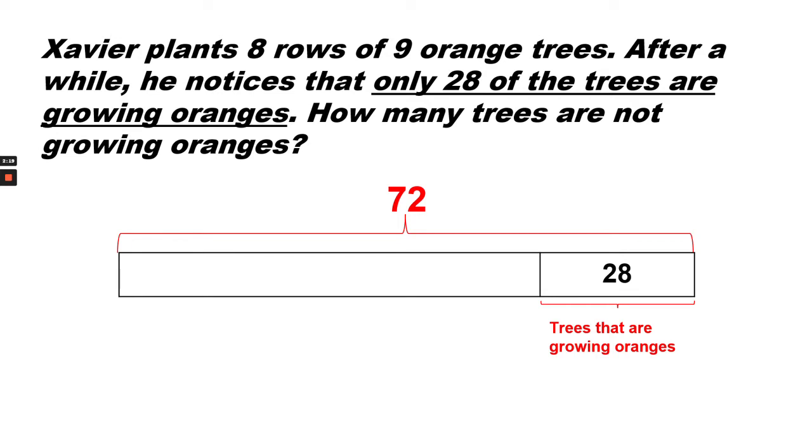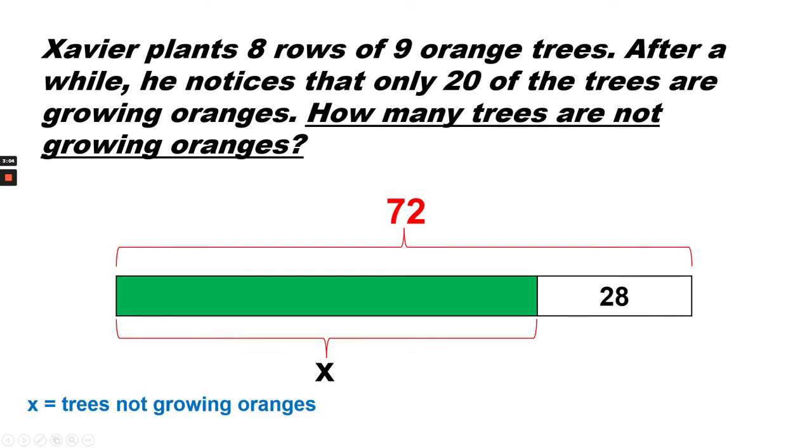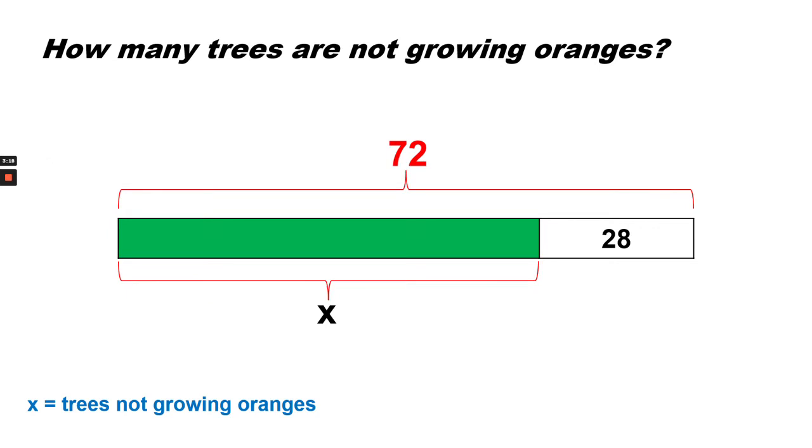Now we're going to look at the second part of the question. He notices that only 28 of the trees are growing oranges. How many trees are not growing oranges? That means that we need to find the difference between the total number of trees that he planted and the trees that are growing oranges. We don't know how many are not growing oranges, so we can say that X equals trees not growing oranges.